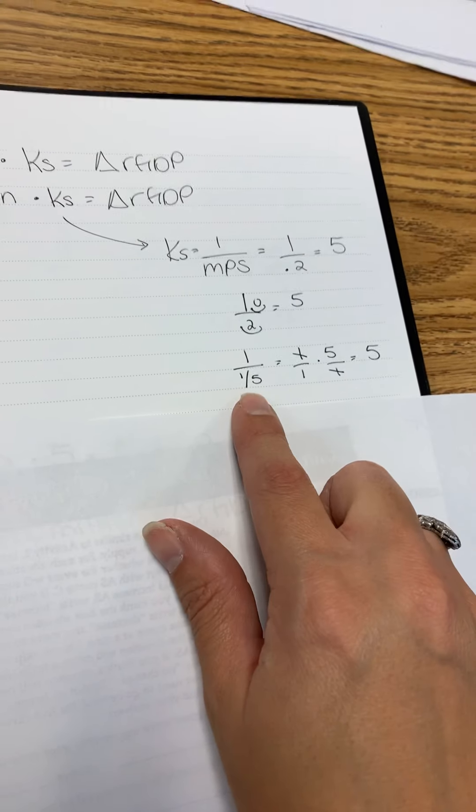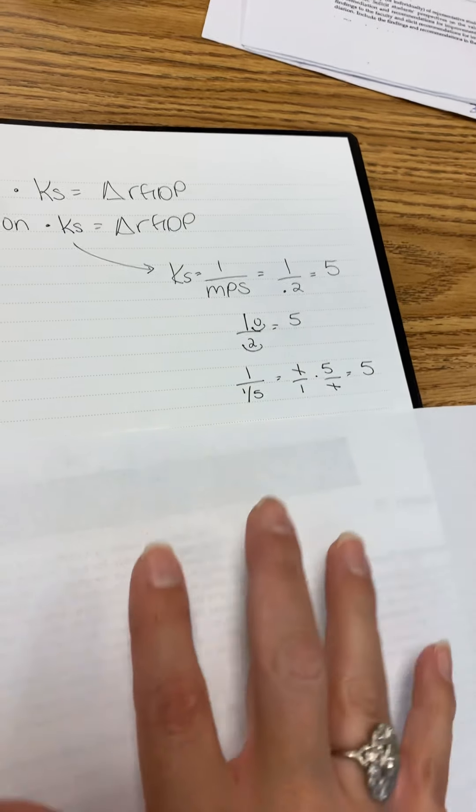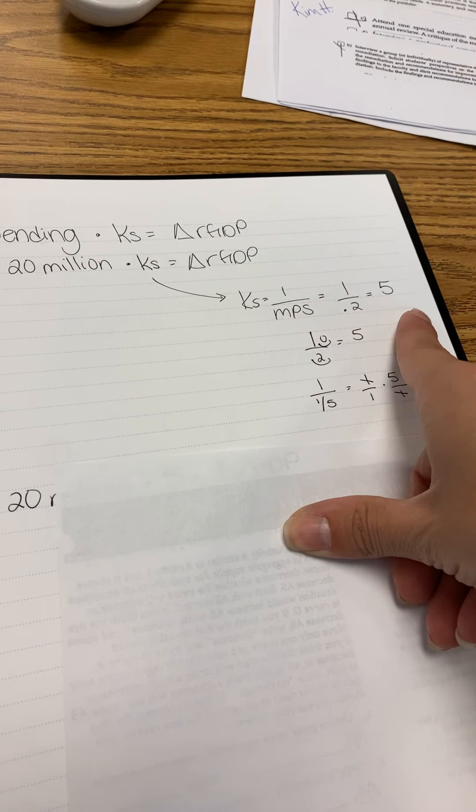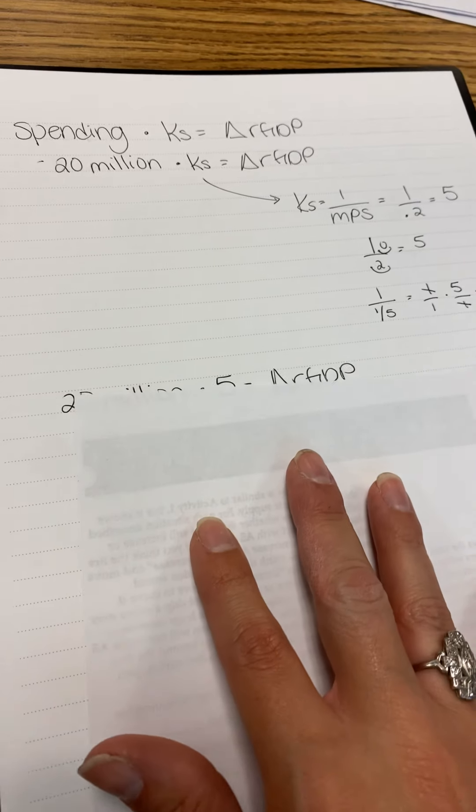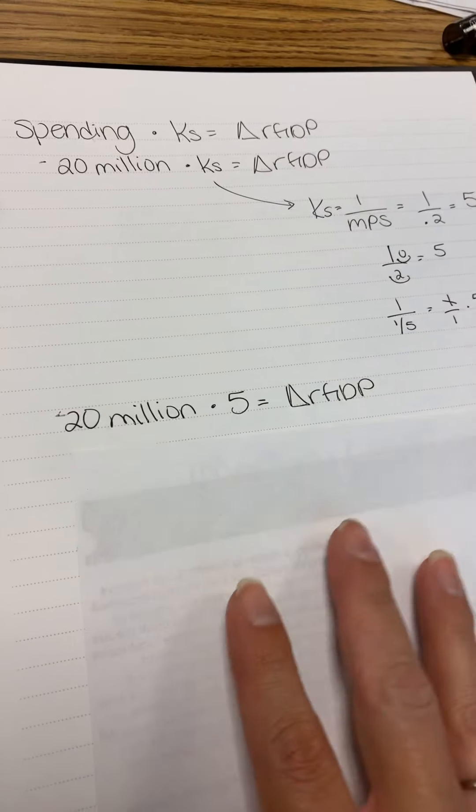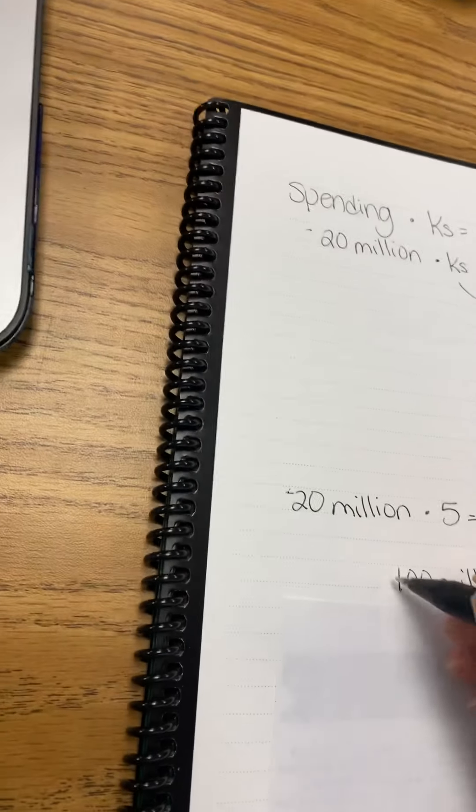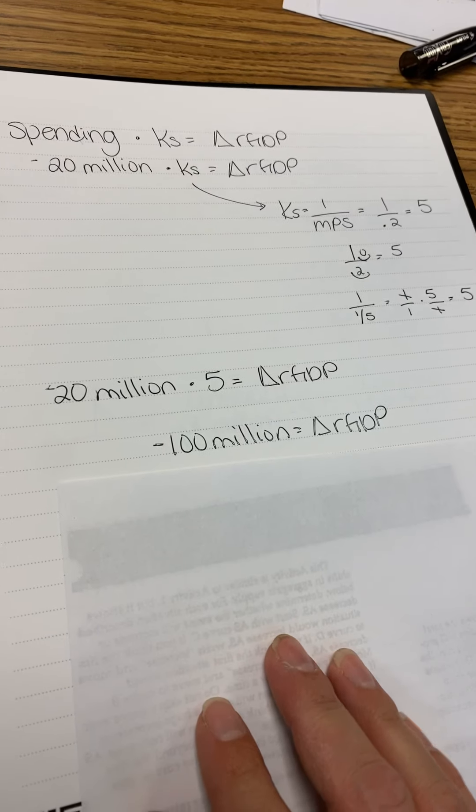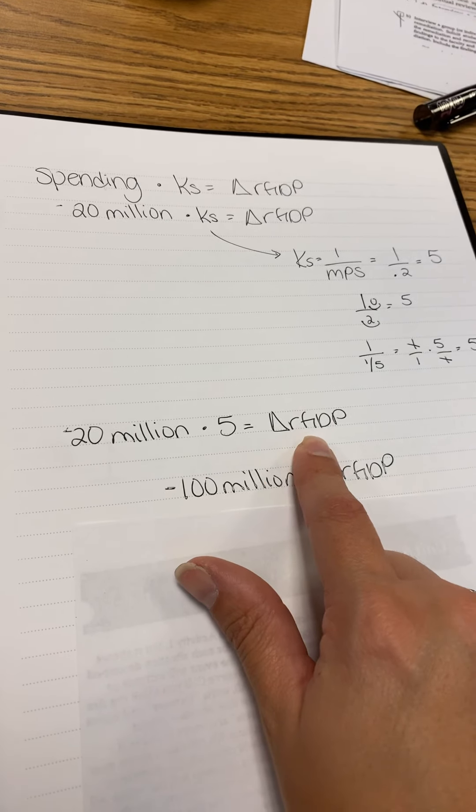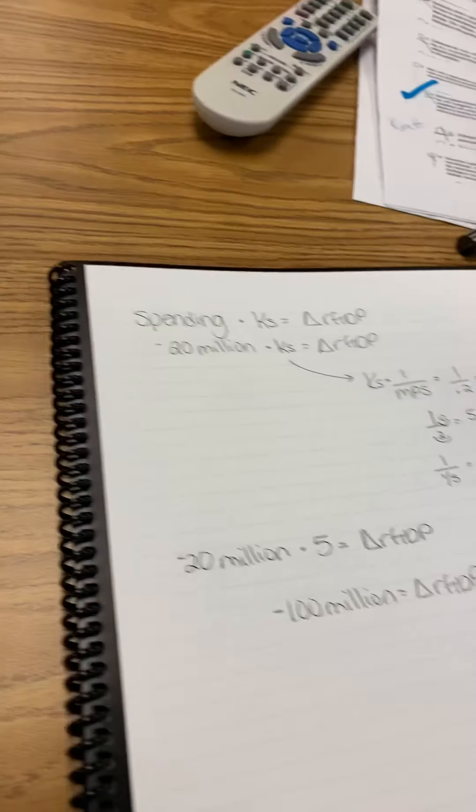Which is 5. Or you can do fractions within fractions. But either way, you just solved for KS, the spending multiplier, and KS is 5. So I can plug that into my problem. Now it's 20 million decreasing times 5. GDP is going to decrease by 100 million because it had change of investment spending times the spending multiplier. That's the first question.